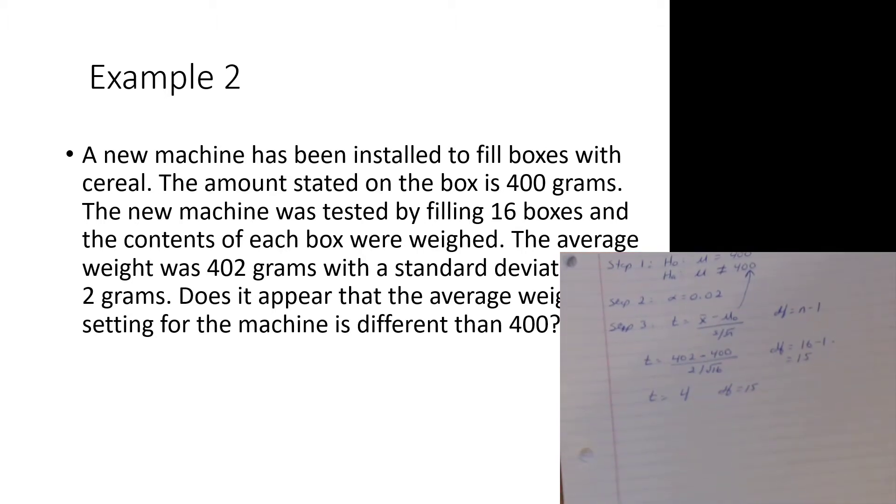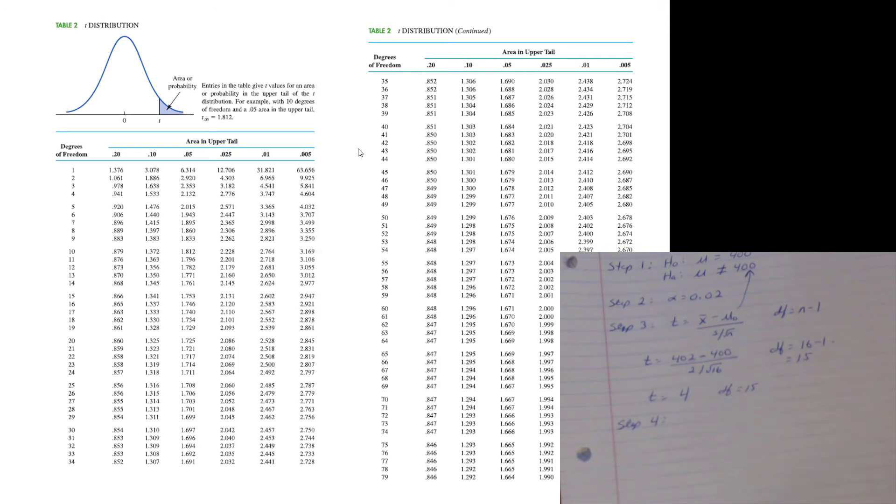Step four, we calculate the p-value. We have a couple of different ways, just like before - we've got the Excel way and the table way to do this. Let's look at our table first.